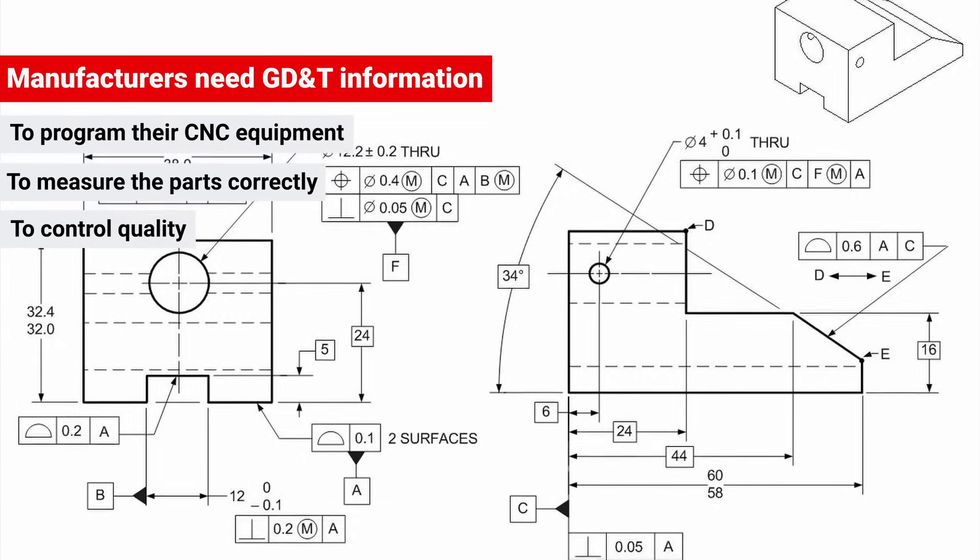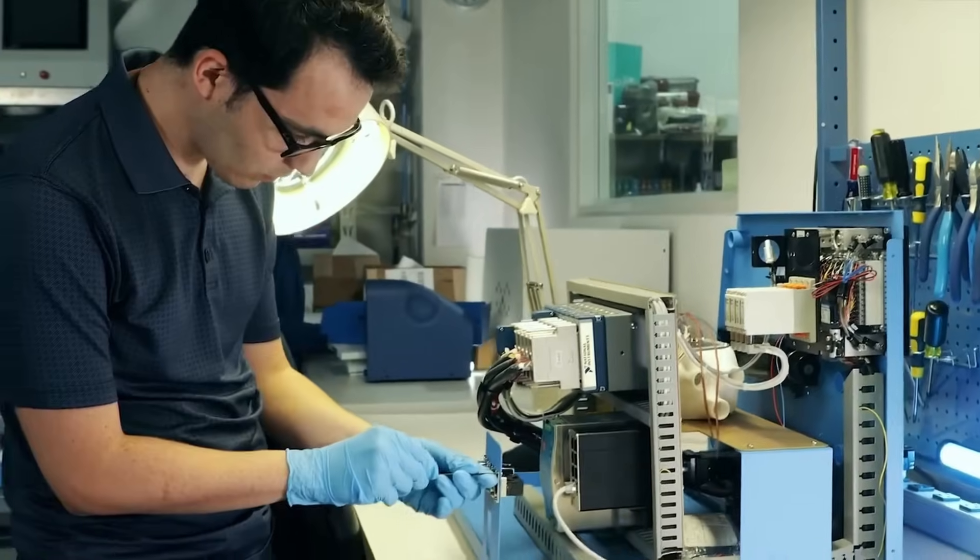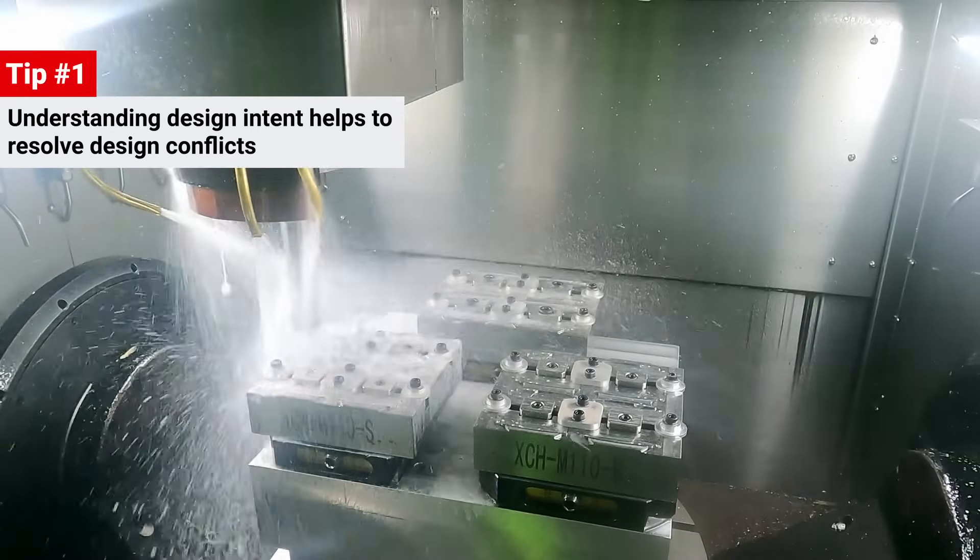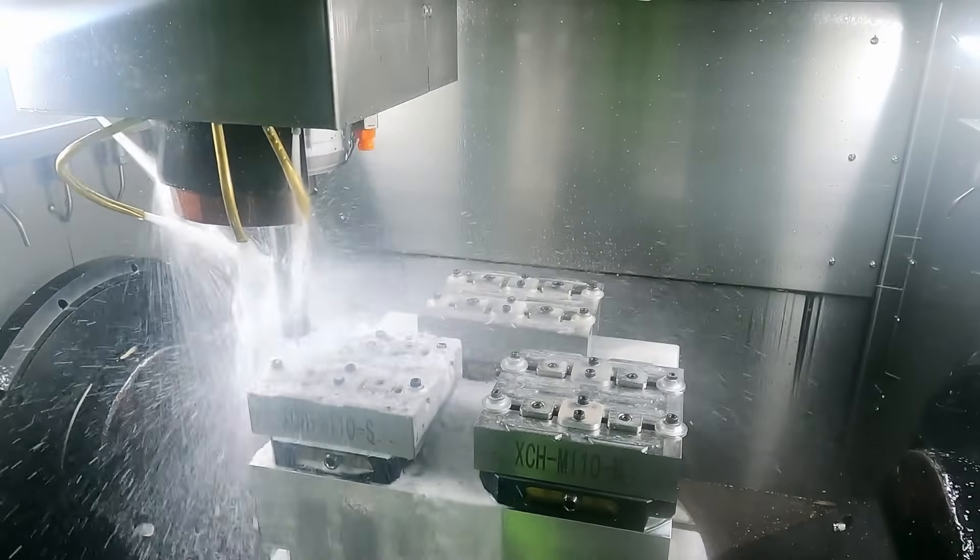GD&T is also used to show design intent. This is a very important concept, since it helps define the larger environment in which the part is meant to function. Understanding intent helps to resolve design conflicts, as we'll see in this case study.